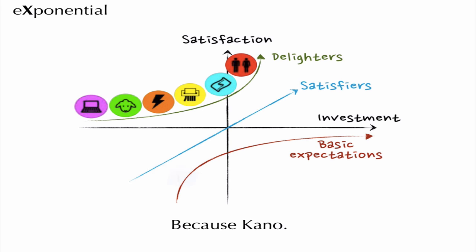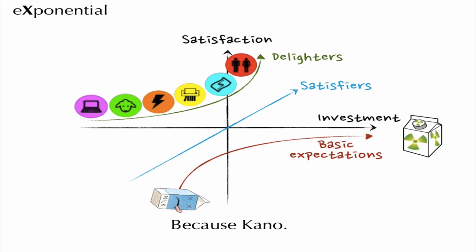There are some products like a milk carton — if your milk carton doesn't keep the milk in, it's not satisfying basic expectations and you won't sell many of them. But if you clad it in lead to keep the gamma rays out, you're not going to sell any more of them either. On the other hand, in the early days of digital cameras, just small incremental improvements in shutter speed, megapixels, or colour quality were enormously delightful and would sell huge numbers of devices. Kano's insight was that over time, all delighters become basic expectations.